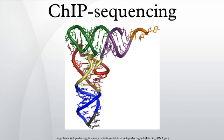ChIP is a powerful method to selectively enrich for DNA sequences bound by a particular protein in living cells. However, the widespread use of this method has been limited by the lack of a sufficiently robust method to identify all of the enriched DNA sequences. The ChIP process enriches specific cross-linked DNA-protein complexes using an antibody against the protein of interest. For a good description of the ChIP wet lab protocol, see ChIP-on-Chip.